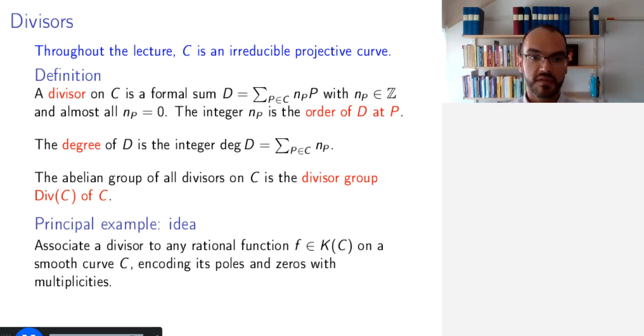And so the main example, the principal example of this construction, is associating a divisor to any rational function. So to give you an example, let us look at this in an affine setting.